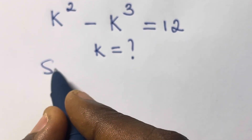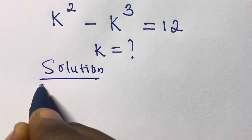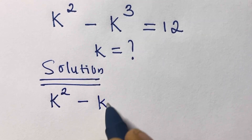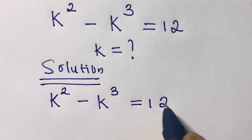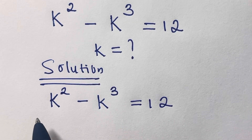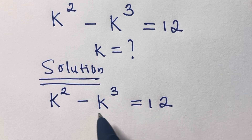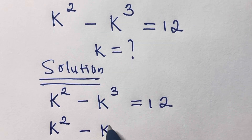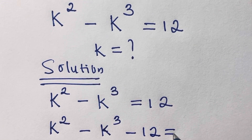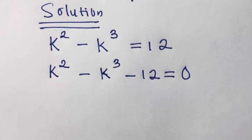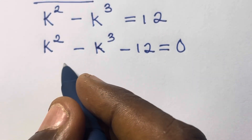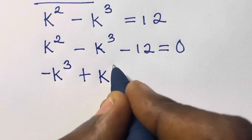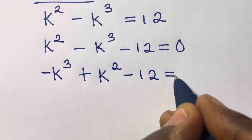Let's say solution. We have k squared minus k raised to power 3 equals 12. From here, let's transfer this 12 to the other side, so we have k squared minus k raised to power 3 minus 12 equals zero. We arrange according to increasing power: minus k raised to power 3 plus k squared minus 12 equals zero.